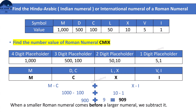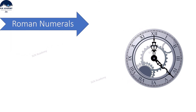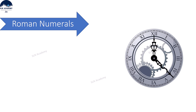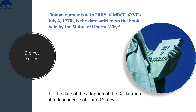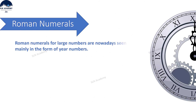Uses of Roman numerals — where do we use them? Roman numerals are widely used to show the hours on some analog clocks and watches. Roman numerals are also found in numbering paragraphs to divide the main sections and subsections. Did you know? July 4, 1776 is the date written on the book held by the Statue of Liberty — it is the date of adoption of the Declaration of Independence of the United States. Roman numerals for large numbers are nowadays seen mainly in the form of year numbers; for example, the year 2019 is represented by MMXIX.